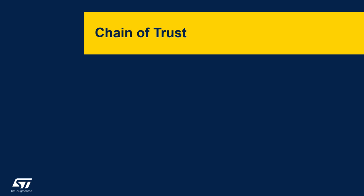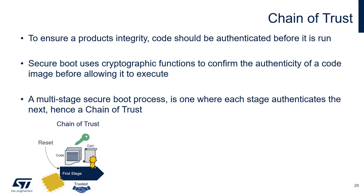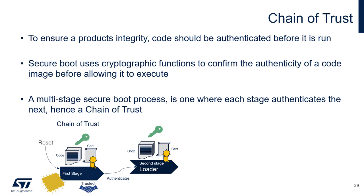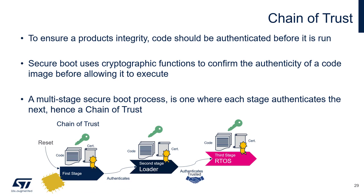Let's explore how we use a root of trust to establish a chain of trust. To ensure product availability and integrity, all code should be authenticated before it is run. A great example of the chain of trust being implemented is the secure boot process. A secure boot process uses cryptographic functions to confirm the authenticity of code before allowing it to execute. A multi-stage boot process is one where each stage authenticates to the next, hence a chain of trust.